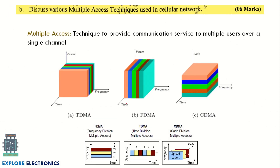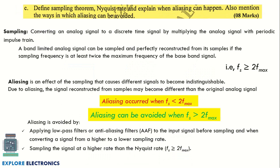The next question asks you to discuss various multiple access techniques used in cellular networks. There are three techniques: TDMA (Time Division Multiple Access), FDMA (Frequency Division Multiple Access), and CDMA (Code Division Multiple Access). In TDMA, different time slots are allocated; in FDMA, different frequencies are allocated; in CDMA, the same time and same frequency are used but with different codes.